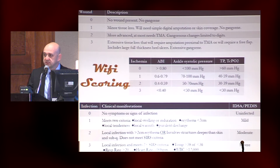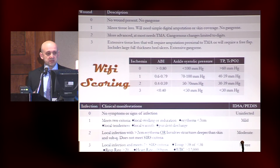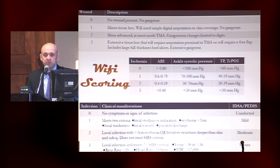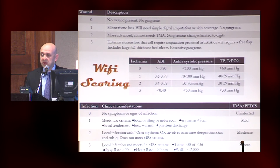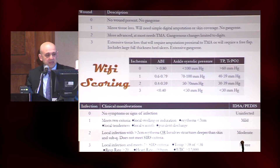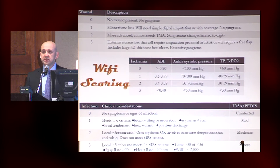The WIfI scoring system takes into account all three categories of amputation risk. For wounds, wound grade zero is no wound, wound grade one is minor tissue loss localized to digits, and wound grade three is extensive tissue loss salvageable only by something more proximal than a TMA — possibly needing a free flap — or posterior involvement of the calcaneus. For ischemia, grade zero is a toe pressure greater than 60 and grade three is a toe pressure less than 30, evaluated by non-invasive modality. The infection category was taken directly from IDSA: infection grade zero is no infection and grade three is infection with sepsis.